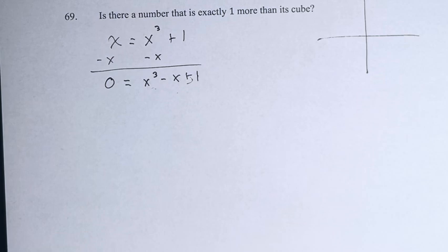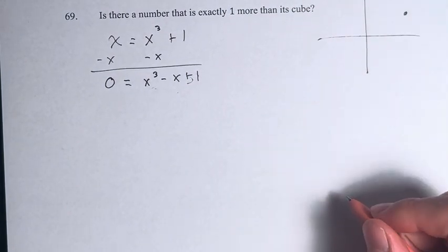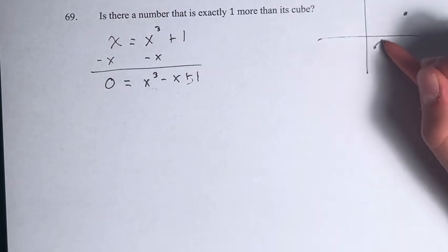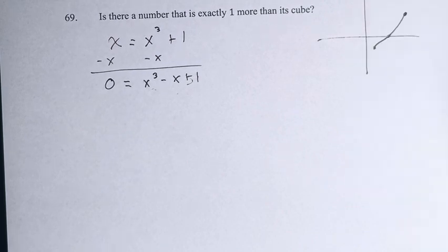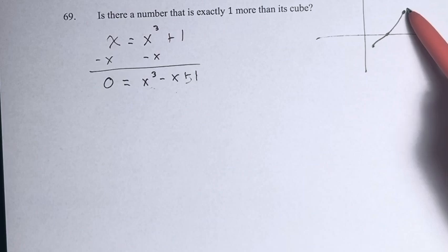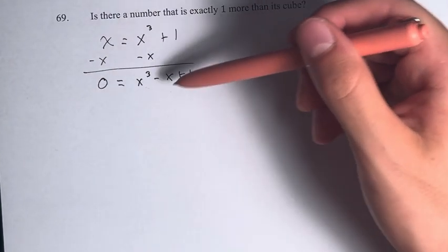If we have a function that is continuous, and at one point it has a positive value, and at another point it has a negative value, then at some point it has to cross the x-axis and therefore have a value of zero at some point in between these two. This is only true for continuous functions, but again, that applies here.